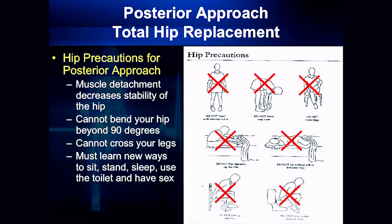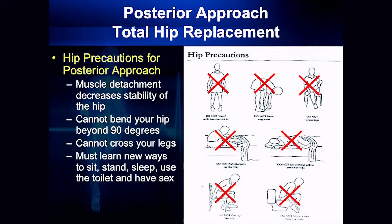Another thing with the posterior approach — the incision is on the buttock area — is you have these hip precautions. Hip precautions mean that you can't cross your legs over. Essentially, if you're going to use a restroom, for instance, a lot of times you have to have an elevated toilet seat. These precautions are used with the posterior approach because those muscles have been cut around the hip.